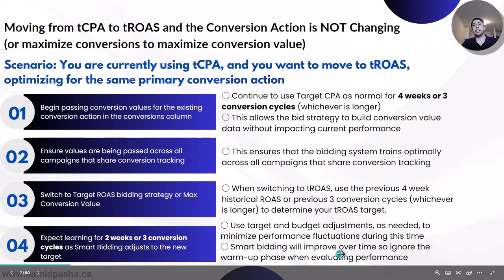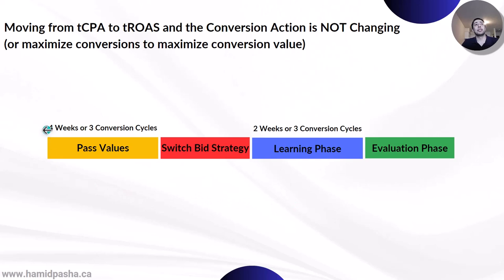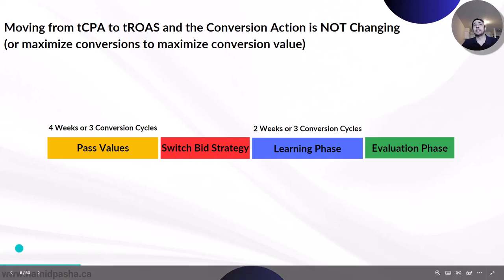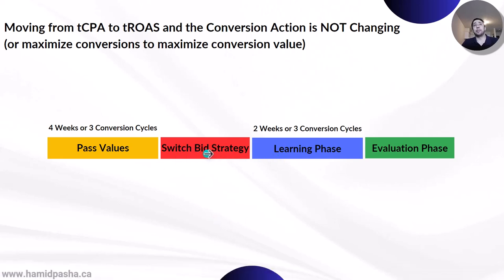Smart bidding will improve over time, so when evaluating performance, ignore the warm-up phase. This is how the workflow looks like: for the initial four weeks, just pass conversion value data. After that, you can switch the bid strategy from target CPA to target ROAS. Then, after the switch of the bid strategy, you should expect two weeks of learning phase. You should ignore that period in your performance evaluation, and after that you will be in the evaluation phase.